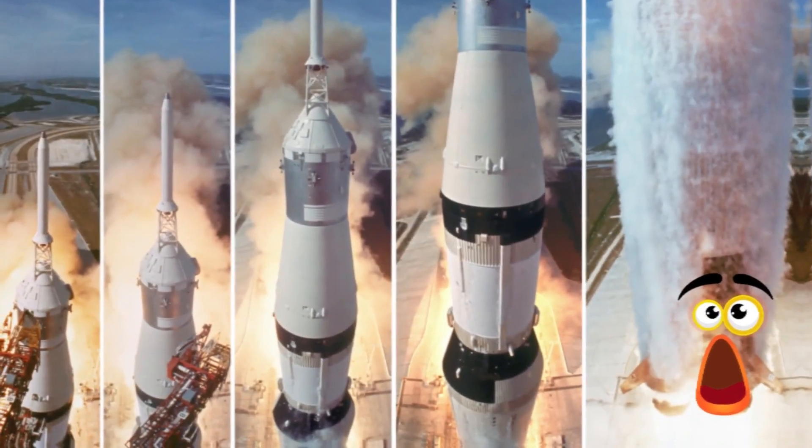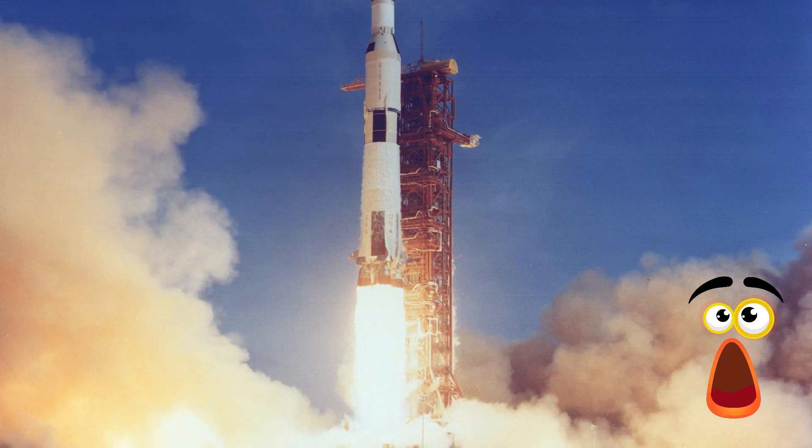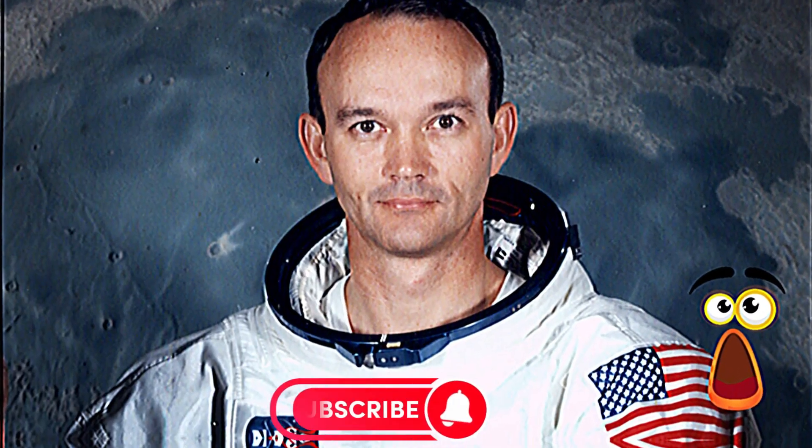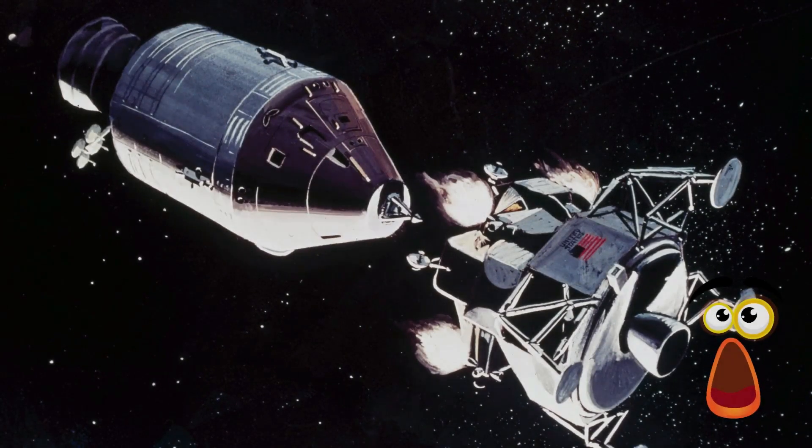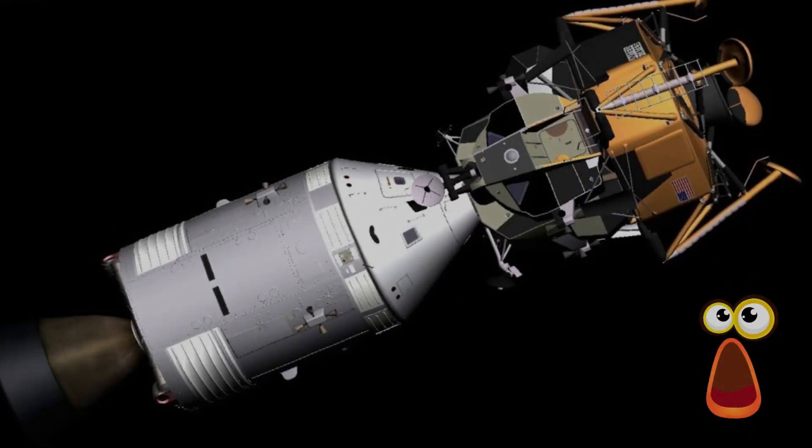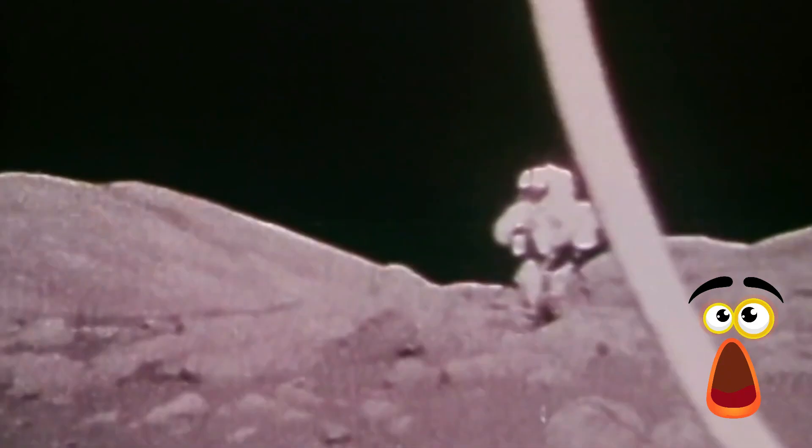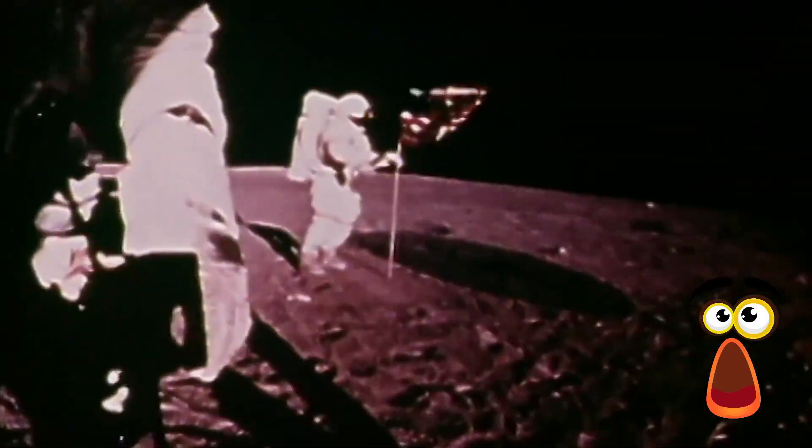Apollo 11 began its groundbreaking mission on July 16, 1969. Astronauts Neil Armstrong, Buzz Aldrin, and Michael Collins were aboard the Command Module Columbia as it embarked on a long journey to the Moon. The Eagle Lunar Module and the Command Module parted ways after a four-day space voyage. The entire world held its breath as Neil Armstrong and Buzz Aldrin descended toward the lunar surface.